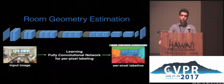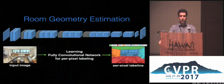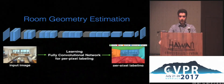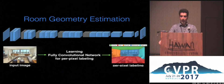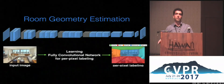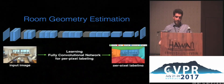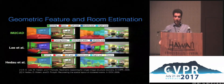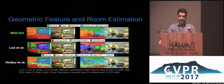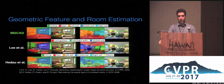For room geometry estimation, we train a fully convolutional neural network on the large-scale LSUN dataset for labeling different faces of the room, and use that geometric feature to rank room layout hypotheses. Here are some examples of M2CAD geometric feature prediction and room layout estimation compared to previous works.